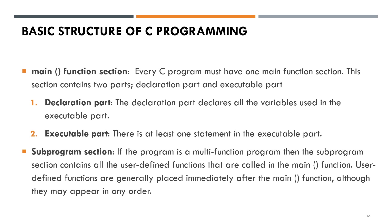The main function section: every C program must have one main function section. This section contains two parts — the declaration part and the executable part. The declaration part declares all variables used in the executable part, and the executable part contains at least one statement to be executed. The sub-program section contains user-defined functions called in the main program; these are normally placed below or immediately after the main function.